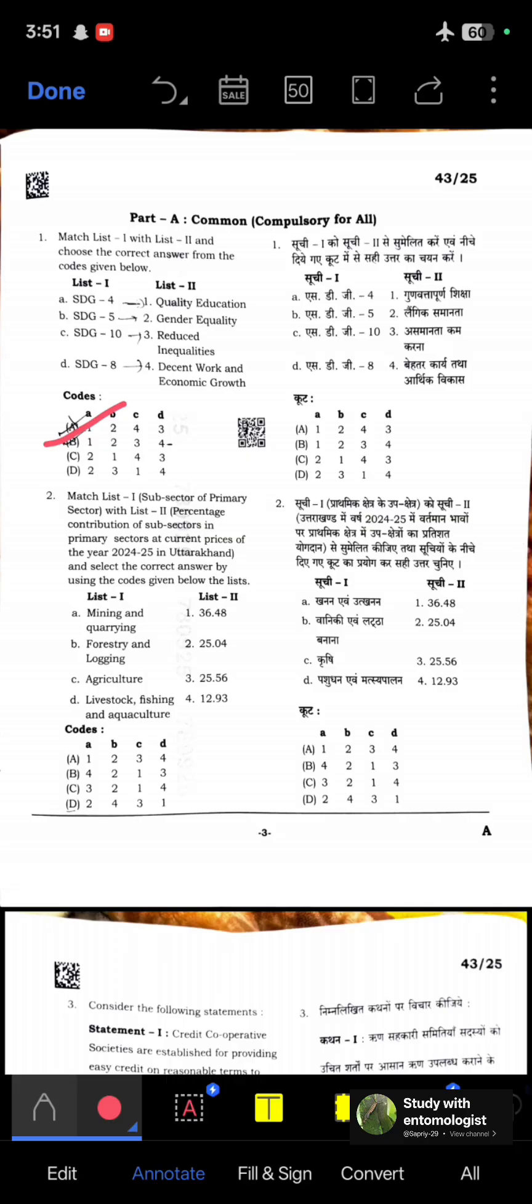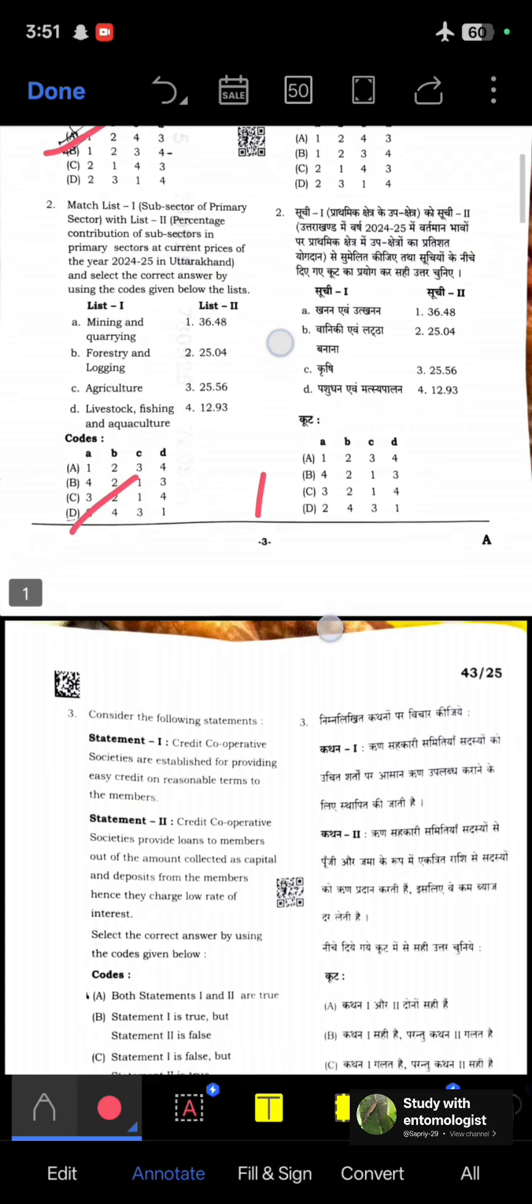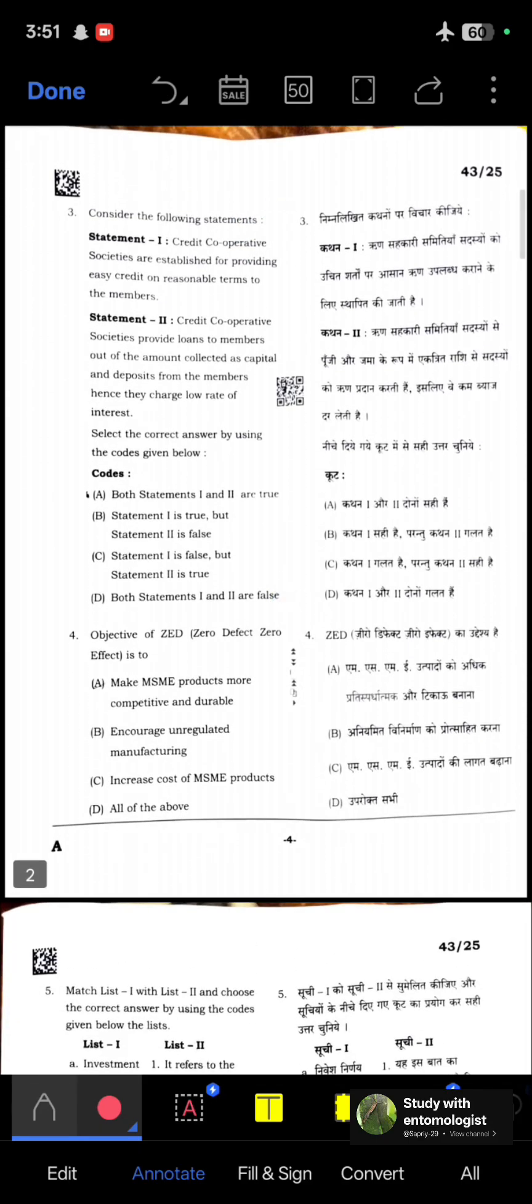Consider the following statements. Statement 1: Credit cooperative societies are established for providing easy credit on reasonable terms to members. Statement 2: Credit cooperative societies provide loans to members out of amounts collected as capital and deposits, hence they charge low rates of interest. Both are true.